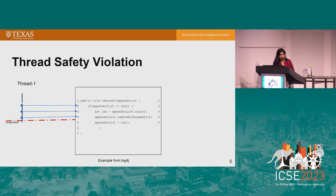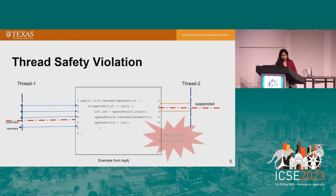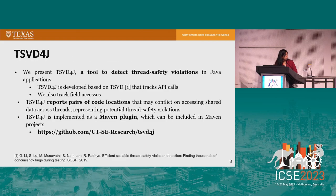Other consequences may also occur due to thread safety violations, such as crashes. For example, thread one executes a line of code and suspends after line four. Thread two enters the if block and suspends. When thread one resumes and finishes execution, if thread two comes back and tries to get the size of the appender list, a crash will happen. Hence, we need a tool to automatically detect thread safety issues in our code.